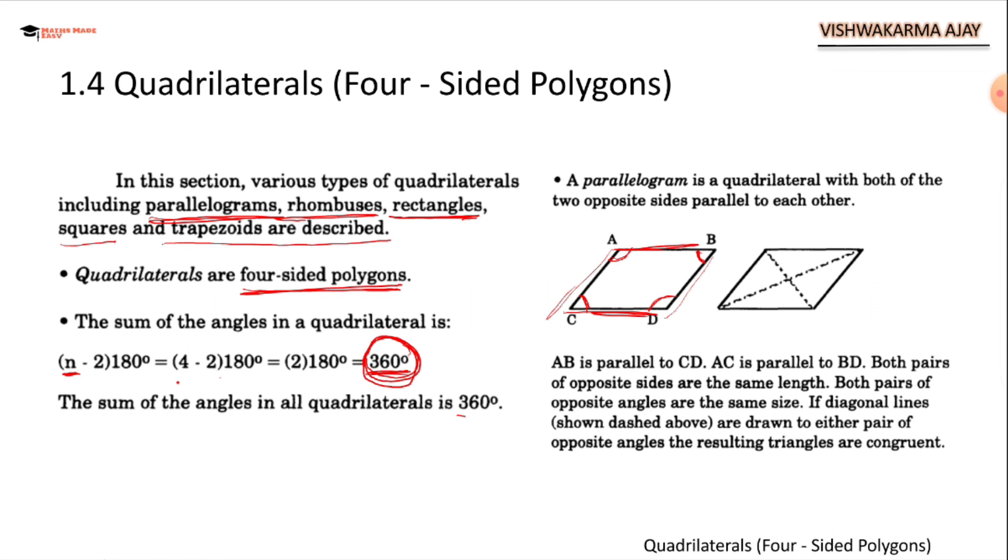If diagonal lines are drawn to either of the opposite angles, the resulting triangles are congruent. If you draw a line like this, both the triangles formed after the diagonal line drawn are congruent. Either you draw AD, triangle ACD and triangle ABD are congruent. Or if you draw CB, triangle ACB, DCB are congruent.